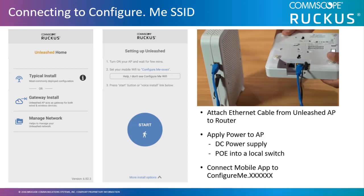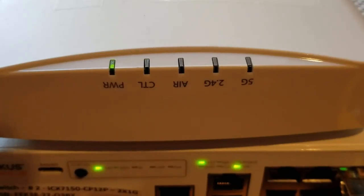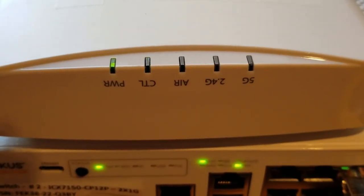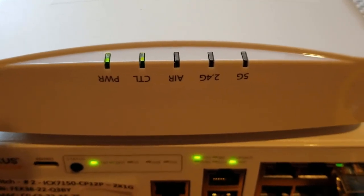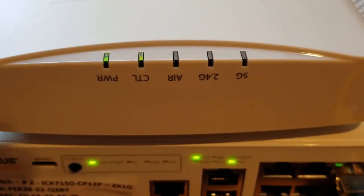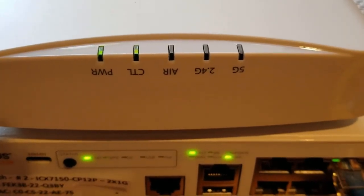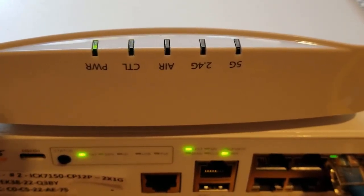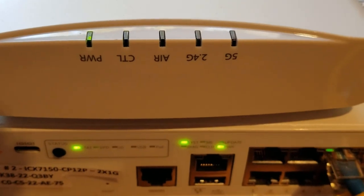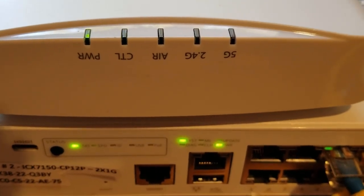Before starting, after receiving your Unleashed AP, attach an Ethernet cable to your access point and plug it into your internet router. Then attach a power cord or plug it into a PoE-enabled switch and boot the access point. When the AP comes from the factory, it is in the factory reset condition. After booting up, when the power LED is solid green and the control LED is blinking green, the AP is ready to configure. At this point, it is broadcasting a configure.me SSID with the last six hex digits of the AP's MAC address. You then connect to the configure.me SSID and begin installation.